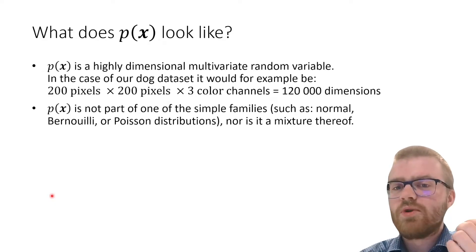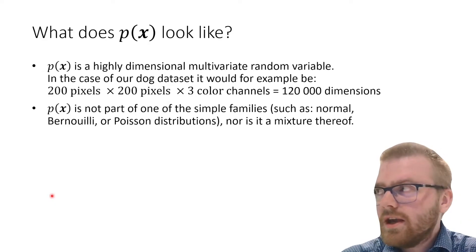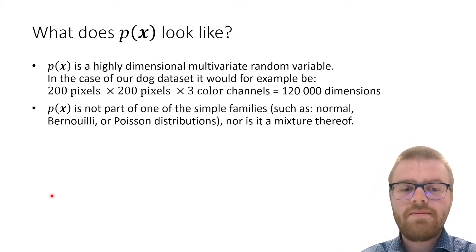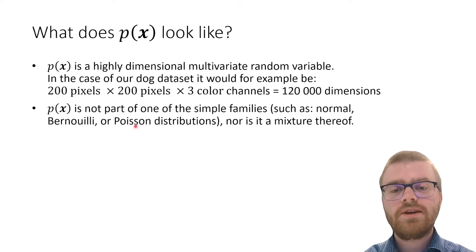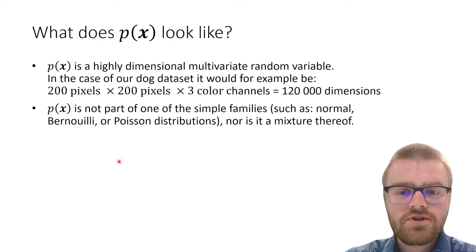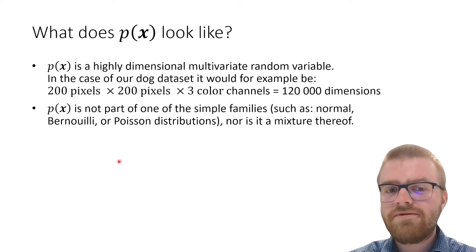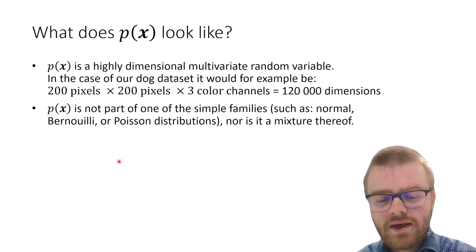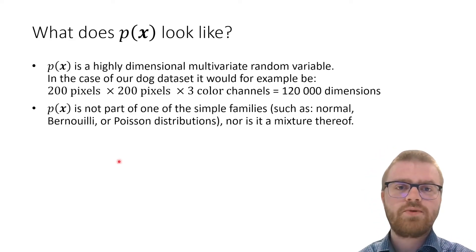So what does this probability distribution look like? Well, it's often highly dimensional. Even for small pictures of 200 pixels by 200 pixels we'll already have like 120,000 dimensions. Also, this probability distribution is very complex and not just one of the simple families, not a normal or a Poisson or Bernoulli. It will be very difficult to model this probability distribution directly. So how do we deal with this problem?